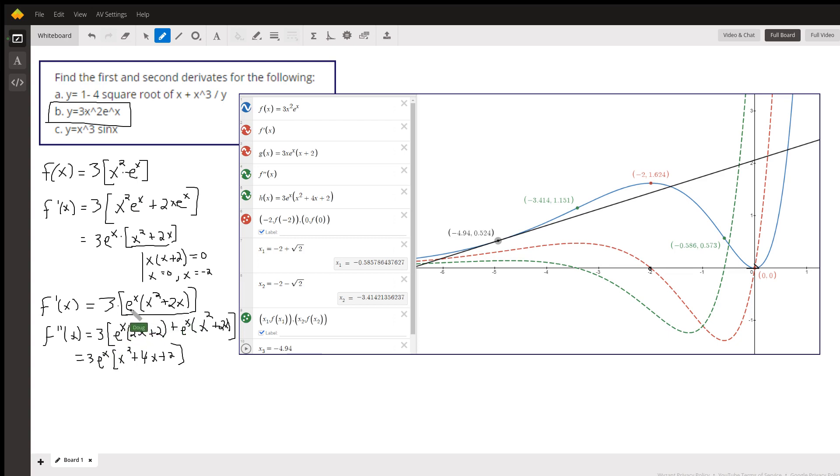Again employing the product rule: first times the derivative of the second, plus the second times the derivative of the first. And now I can factor out an e to the x and simplify: 2x plus 2 plus x squared plus 2x gives me x squared plus 4x plus 2. There's your second derivative.